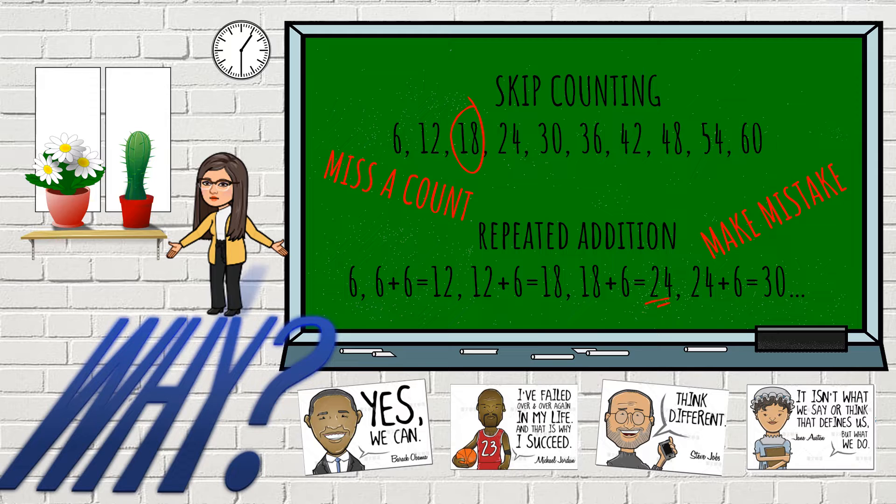And worst of all you can't do division when you are using either of these methods. Because when I'm asking you 42 divided by 6 you just can't remember which number because you don't memorize them in that order.